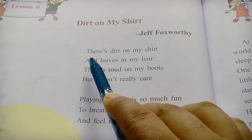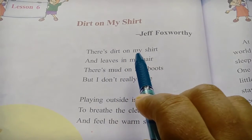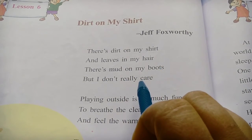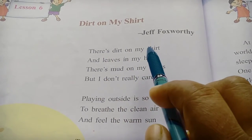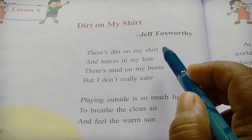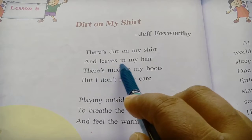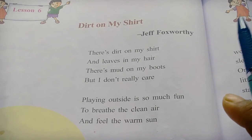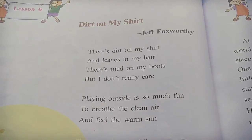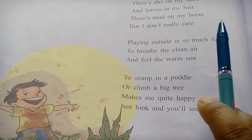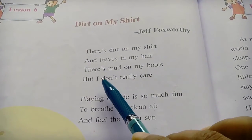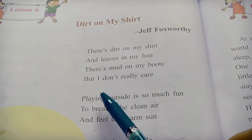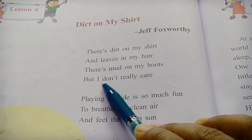Here is dirt on my shirt and a leaf on my hair. There is mud on my boot, but I don't really care. Dirt on my shirt means mud on my shirt, and leaf on my hair. There is mud on my boot, but I don't really care.